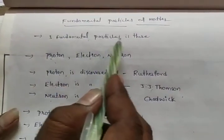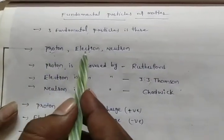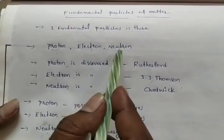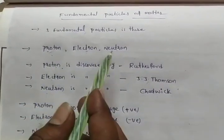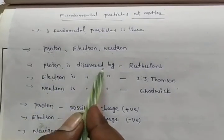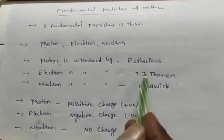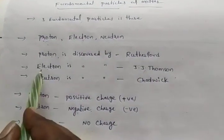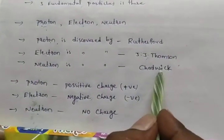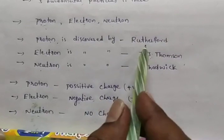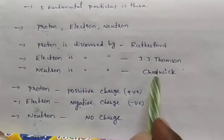The three fundamental particles are proton, electron, and neutron. Proton was discovered by Rutherford, electron was discovered by J.J. Thompson, and neutron was discovered by Chadwick.